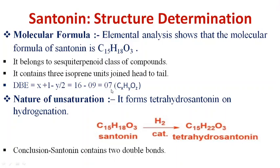The degree of unsaturation of seven means that either double bonds or rings are present in the molecule. Centonin is subjected to hydrogenation using a catalyst to form tetrahydrocentonin. The difference in molecular formula between centonin (H18) and tetrahydrocentonin (H22) is four hydrogen atoms, meaning two molecules of hydrogen are consumed, indicating two double bonds are present.